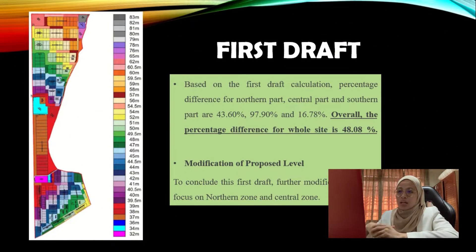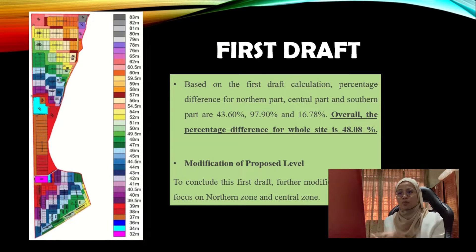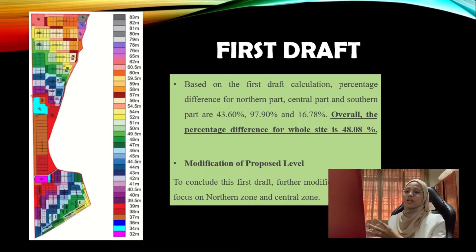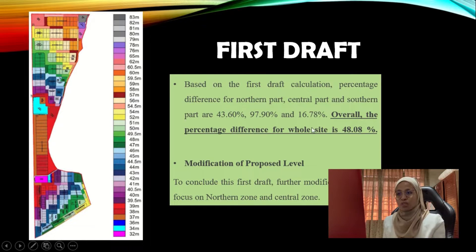The earthworks department did several drafts due to modifications that needed to be done. In the first draft, the percentage difference obtained for the northern, central, and southern parts were 43.6%, 97.9%, and 16.78% respectively. The overall percentage difference for the whole site was 48.08%. As a result, they concluded they had to modify the proposed level, focusing on the northern and central zones, because the percentage difference values were large compared to the southern zone.